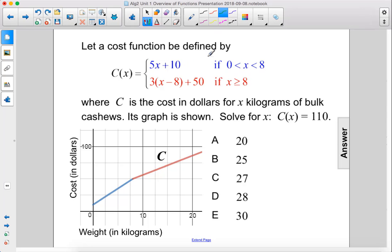Let a cost function be defined by this rule here, where c is the cost in dollars for x kilograms of bulk cashews. Its graph is shown. Solve for x: c of x equals 110.